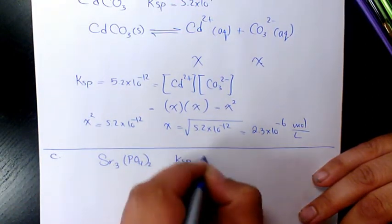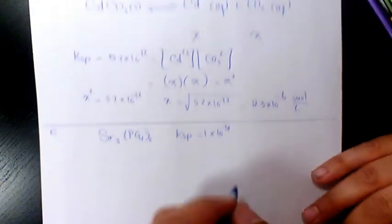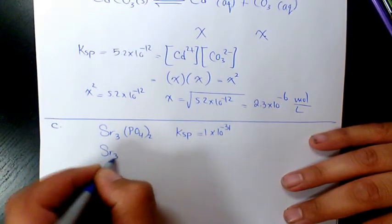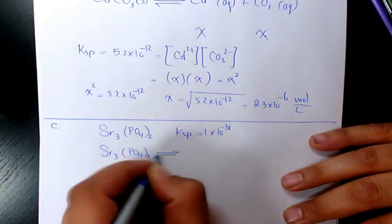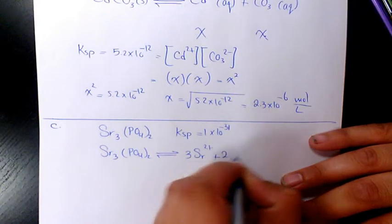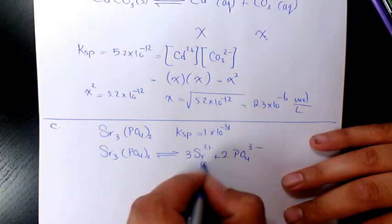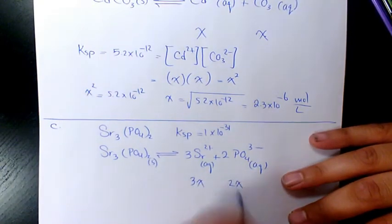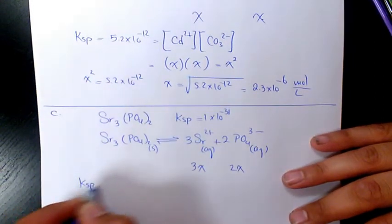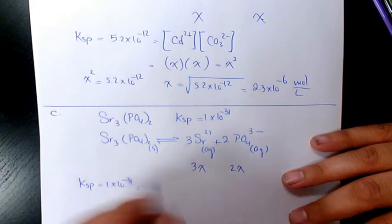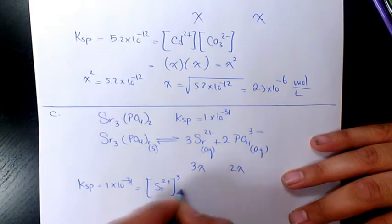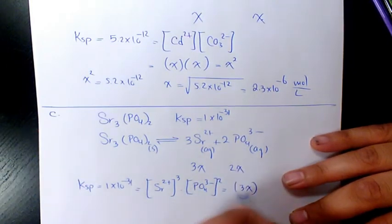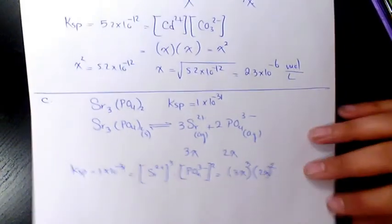In part C we have strontium phosphate, Sr₃(PO₄)₂, with KSP of 1 times 10 to the power of negative 31. When it dissolves it produces Sr²⁺ and PO₄³⁻ ions in aqueous phase. We get 3X for Sr²⁺ and 2X for PO₄³⁻. KSP equals 1 times 10 to the power of negative 31, which equals [Sr²⁺]³ times [PO₄³⁻]², so (3X)³ times (2X)².